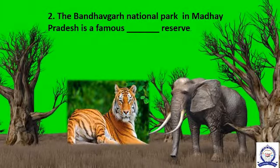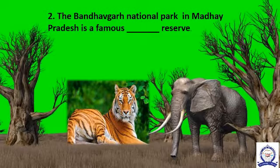The second fill up is: the Bandhavgarh National Park in Madhya Pradesh is a famous dash reserve. The correct answer is Tiger.